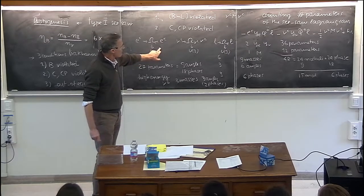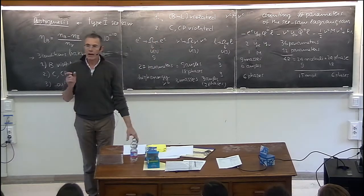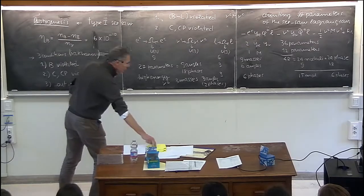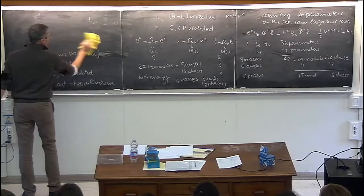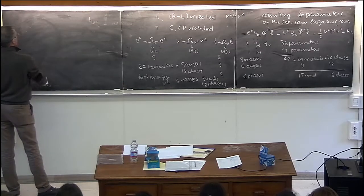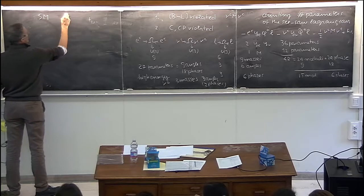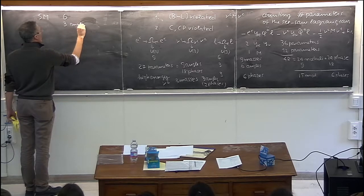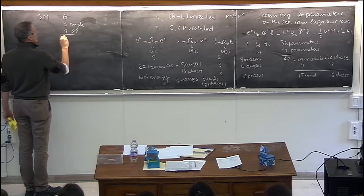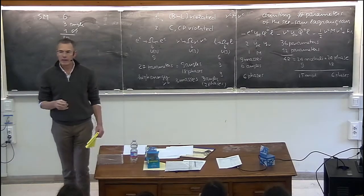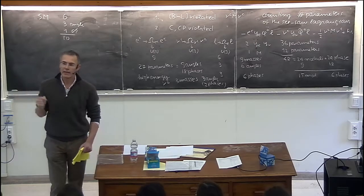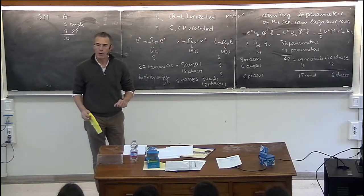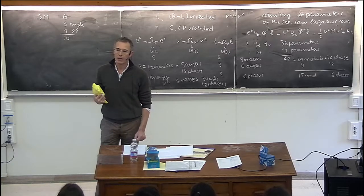As an exercise, use the same parameter-counting reasoning for the quark sector in the standard model. The standard model quark sector has six masses, three mixing angles, and one CP-violating phase — a total of 10 parameters. Apply the same logic and understand why the reasoning must be adapted: there is one fewer free phase compared to the lepton sector.